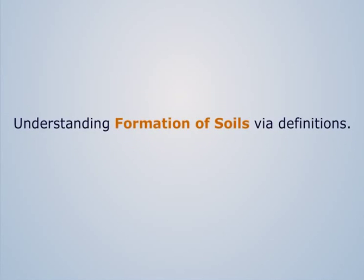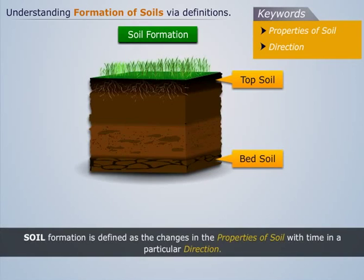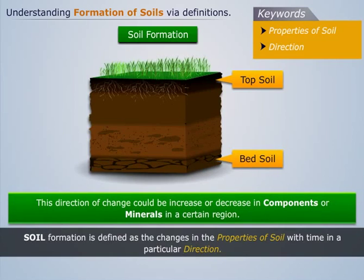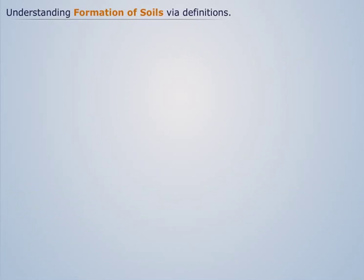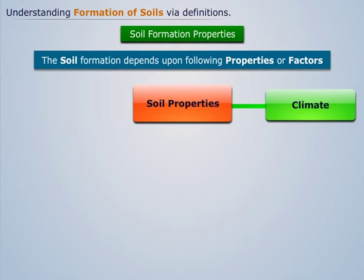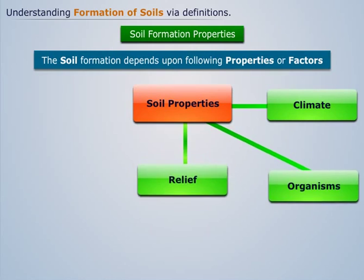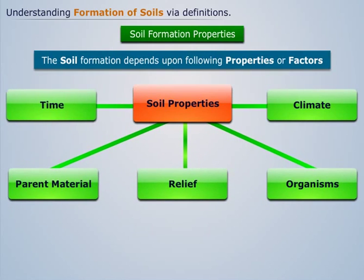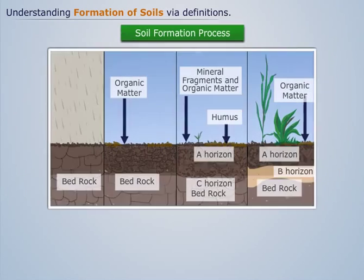Soil formation is defined as the changes in the properties of soil with time in a particular direction. This direction of change could be an increase or decrease in components or minerals in a certain region. Soil formation depends upon the following factors: climate, organisms, relief, parent material, and time.